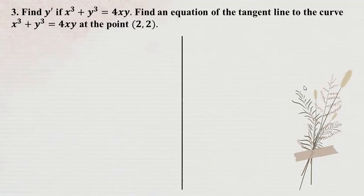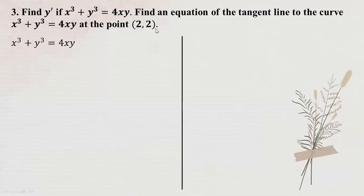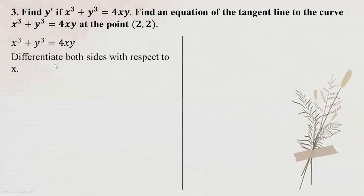Okay, number three. Find the equation. For the implicit function, differentiate both sides with respect to x. This is 3x squared.